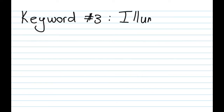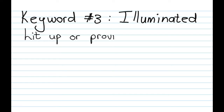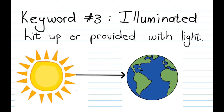Our third keyword is illuminated. This means that something is lit up or provided with light. For example, the earth is illuminated while the sun is luminous, because the sun will illuminate the earth.